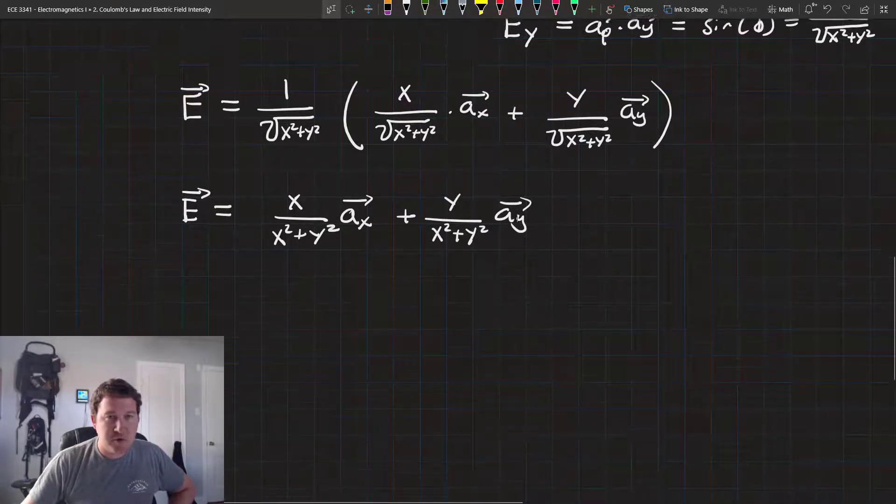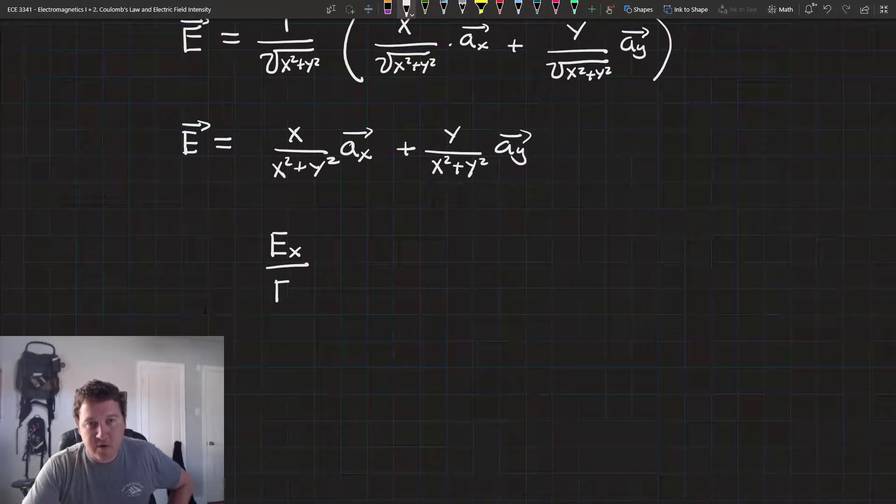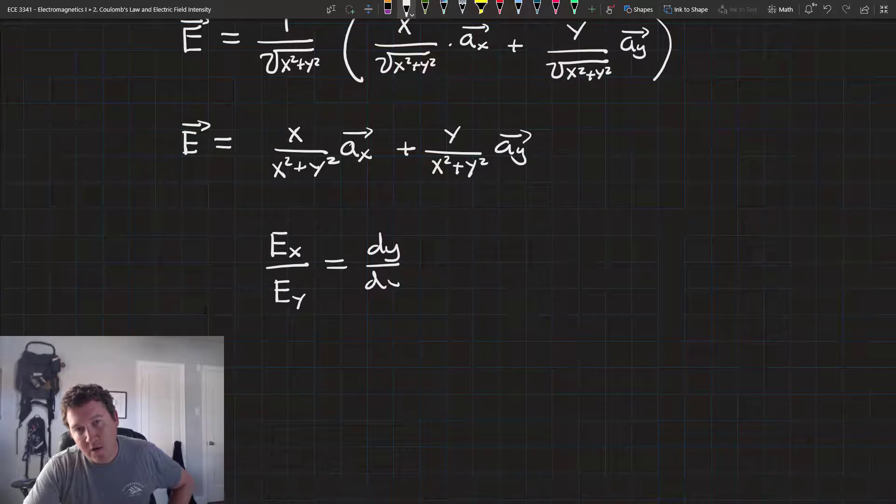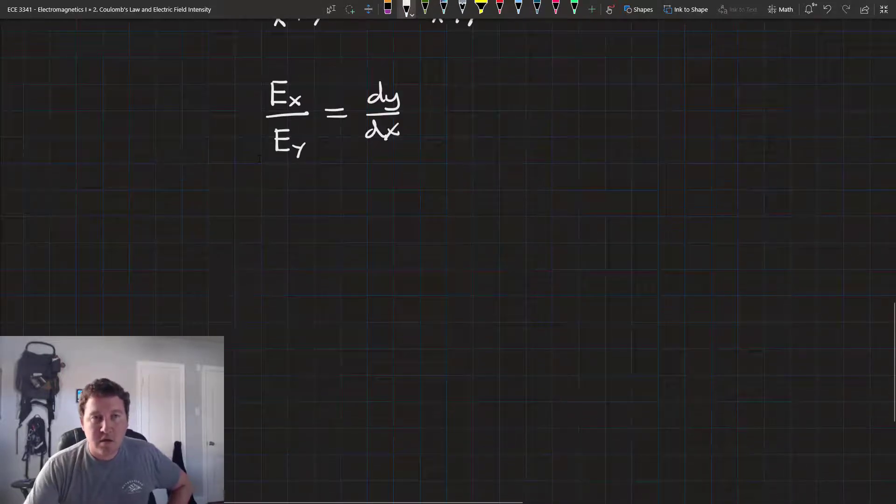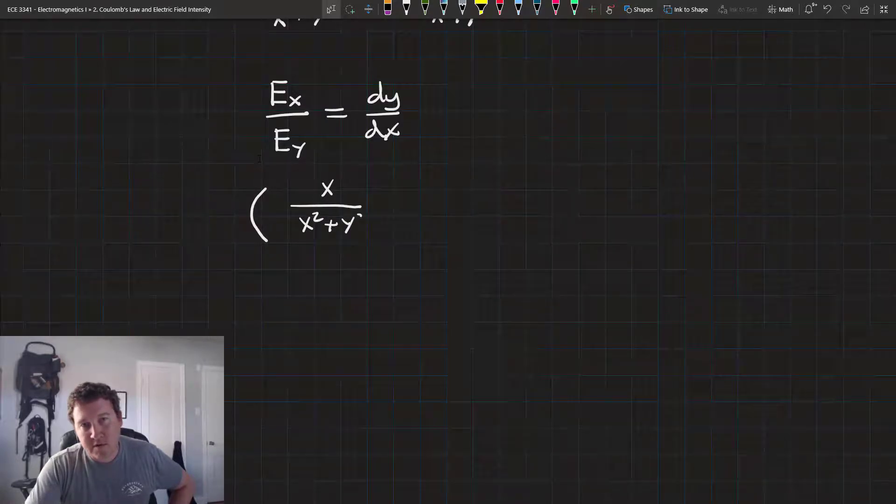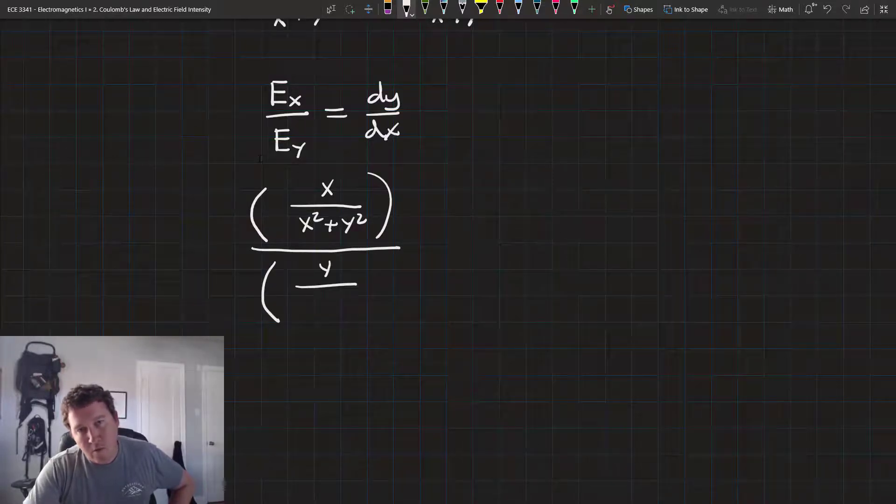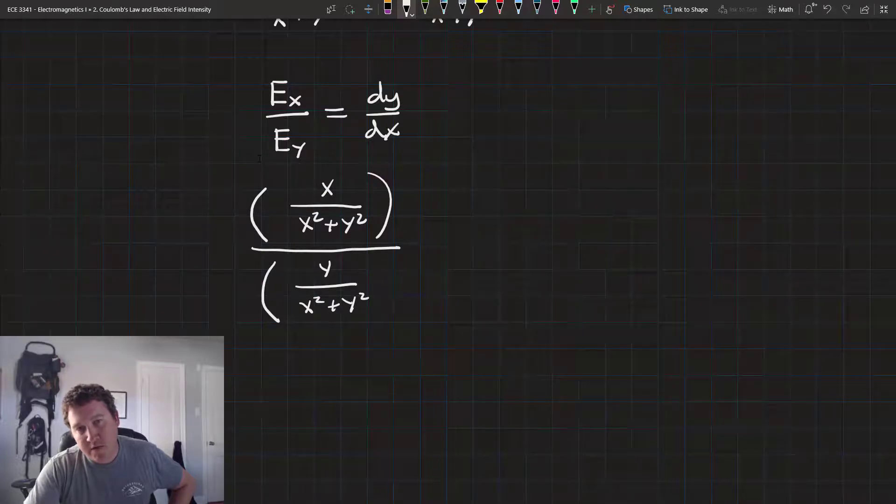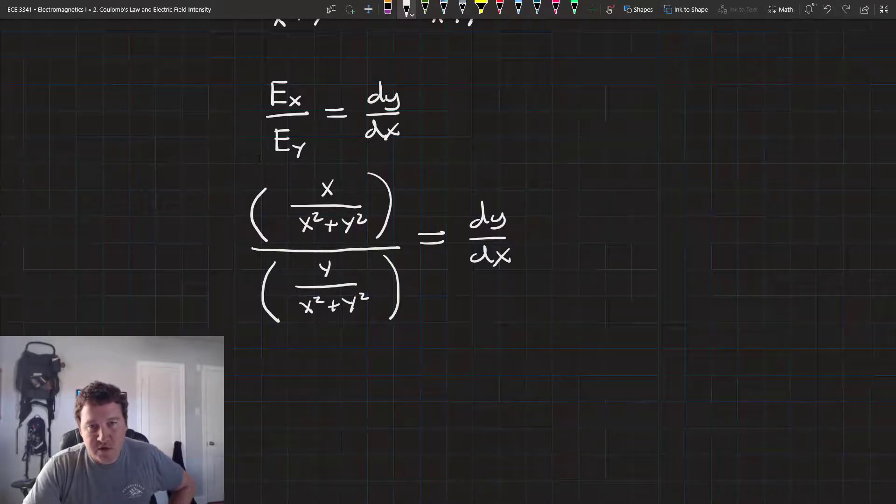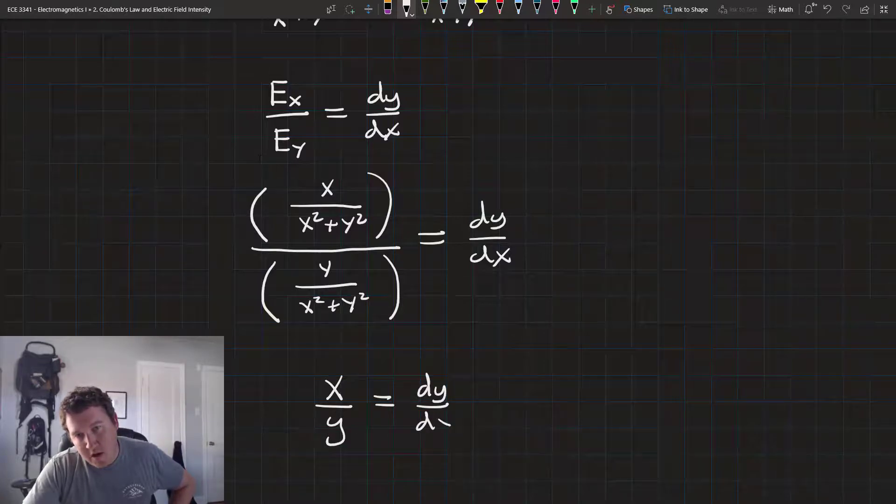So, now we're ready to actually go ahead and solve our differential equation. We have the x component of e over the y component of e is equal to dy over dx. So, x over x squared plus y squared divided by y over x squared plus y squared equals dy over dx, and we're left with the differential equation x over y equals dy/dx.